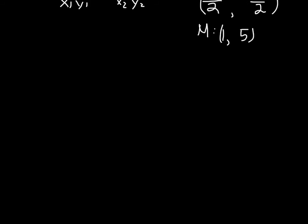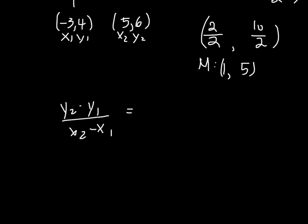So if you remember, our slope formula is y₂ minus y₁ over x₂ minus x₁. So our y₂ is 6, and then y₁ is 4, and then 5 minus negative 3. So our slope is 2 over 8, or 1 over 4.